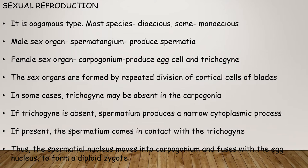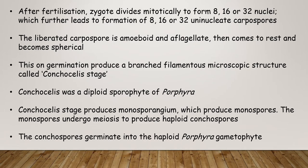Male sex organs are called spermatangia and produce spermatia. Female sex organs are called carpogonia and produce egg cells and trichogyne. Sex organs are formed by repeated division of cortical cells of the blades. In some cases trichogyne may be absent in the carpogonium; if trichogyne is absent, spermatia produce a narrow cytoplasmic process. If present, the spermatium comes in contact with the trichogyne, and the spermatium nucleus moves into the carpogonium and fuses with the egg nucleus to form a diploid zygote. After fertilization, the zygote divides mitotically to form 8, 16, or 32 nuclei.